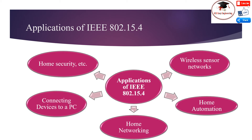The star topology is more suitable for delay-critical applications and small network coverage, while the peer-to-peer topology is more applicable for large networks with multi-hop requirements at the cost of higher network latency. Furthermore, the standard defines two modes for data exchanges: the beacon mode and the non-beacon mode. The beacon mode provides networks with synchronization measures, while the non-beacon mode provides asynchronous features to networks.